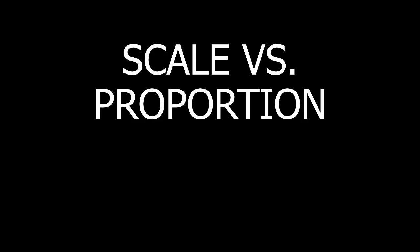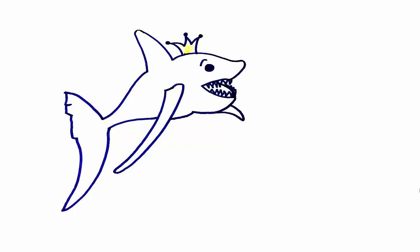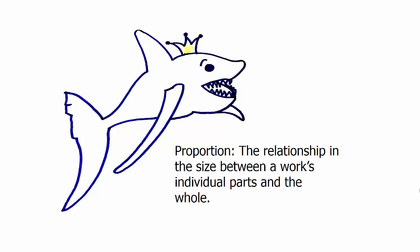Let's take a look at proportion in this example. Here is King Harold the shark. We can talk about proportion when discussing various aspects of his own shape, but we are only talking about him, not comparing him to something else. Proportion is the relationship in size between a work's individual parts and the whole. For example, the height of the fin on top of his back is about half of the height of his tail. Both the fin and the tail are a part of him. Comparing parts of the individual shark to each other is a discussion about proportion.